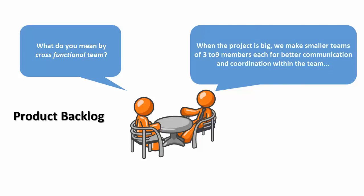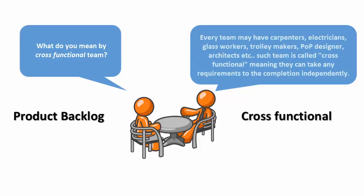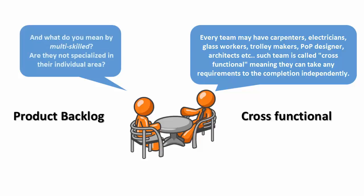When the project is big, we make smaller teams of 3 to 9 members each for better communication and coordination. Every team may have carpenters, electricians, glass workers, trolley makers, POP designers, architects, etc. Such a team is called cross-functional, meaning they can take any requirement to completion independently.